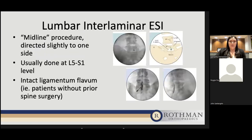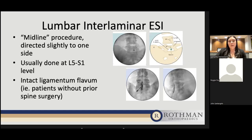For the lumbar interlaminar epidural steroid injection — a more midline procedure directed slightly to one side — we usually do it at the L5-S1 level, which is at the bottom of the lumbar vertebral bodies above the sacrum. We need the intact ligamentum flavum for the loss-of-resistance technique. The fluoroscopic images show the needle hub directed to the correct spot, and the bottom row shows contrast flowing nicely into the epidural space, confirming correct placement.